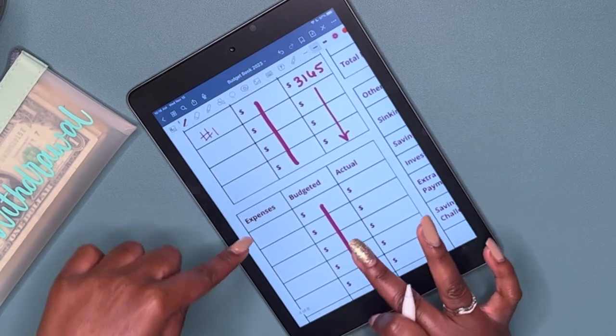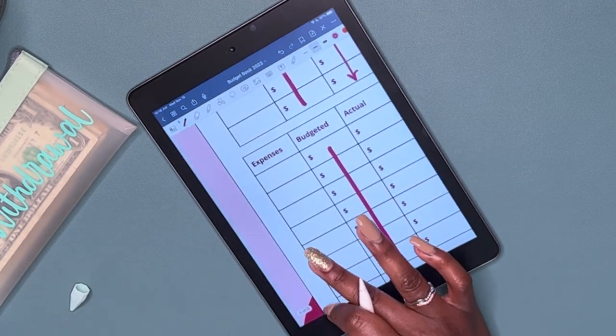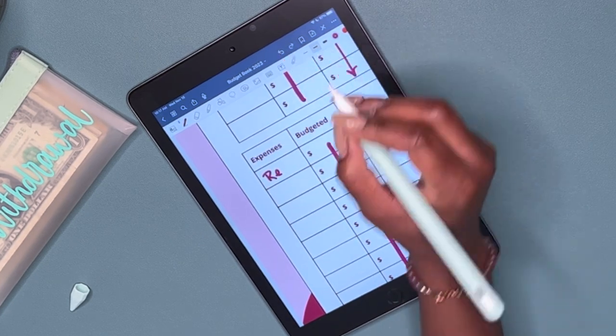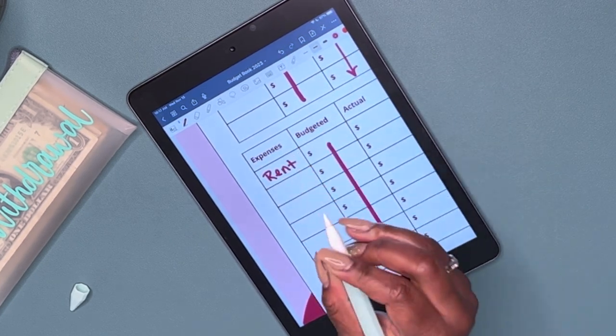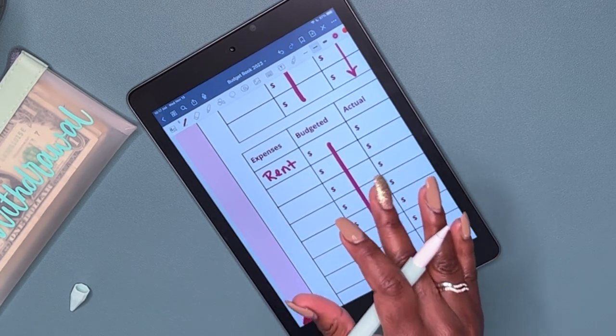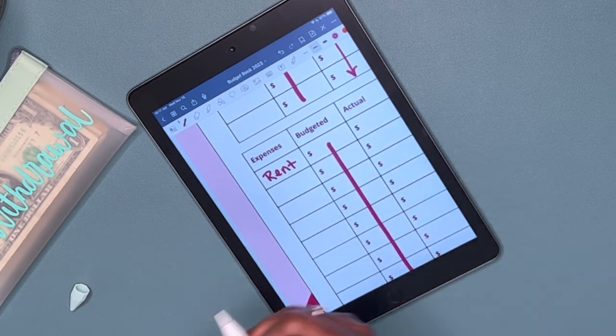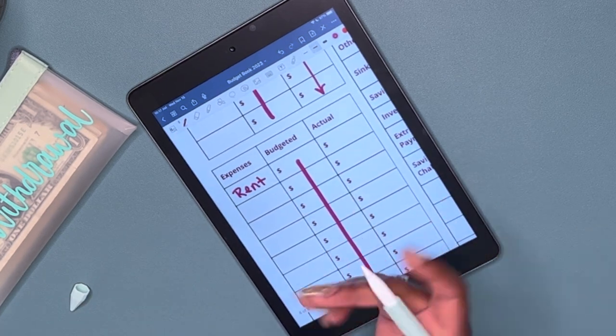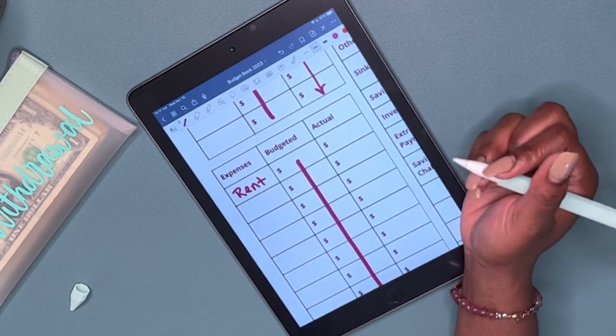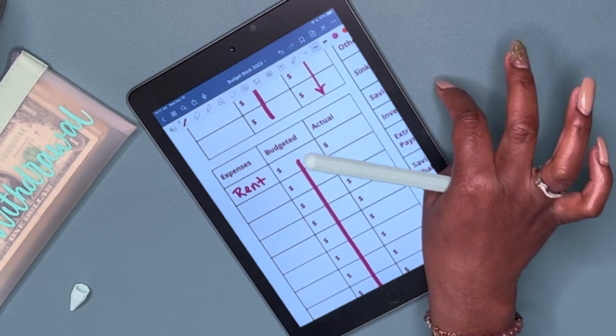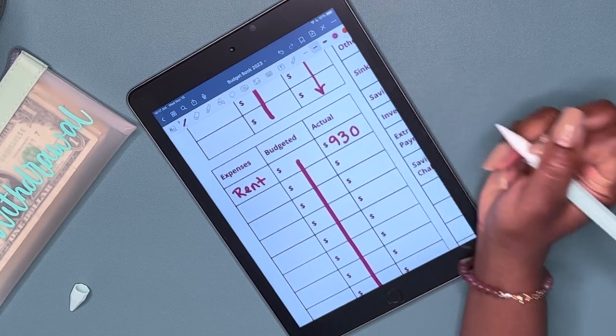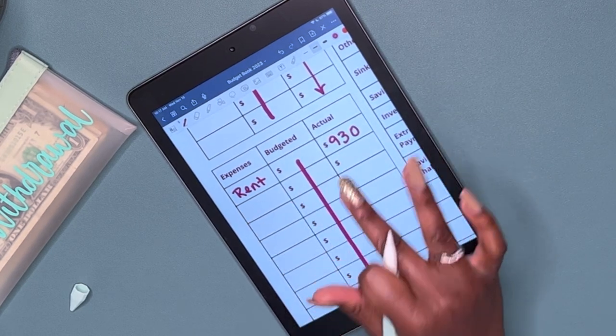So next, I'm going to go to my expenses. And then the first thing I have is rent. I do pay my rent by half. So I do split my rent in half for each pay period. I put half of that rent amount towards my savings account, and then I make one large payment towards the end of the month. So my total rent is $1,855. So I do about $930 for each pay period.